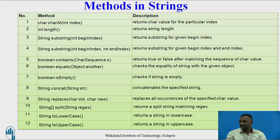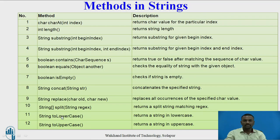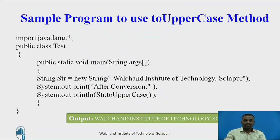toLowerCase converts a given string into lowercase letters, and toUpperCase converts a given string into uppercase. Many such methods are available in strings and can be used as and when required. The string class can call all these methods using a string object.